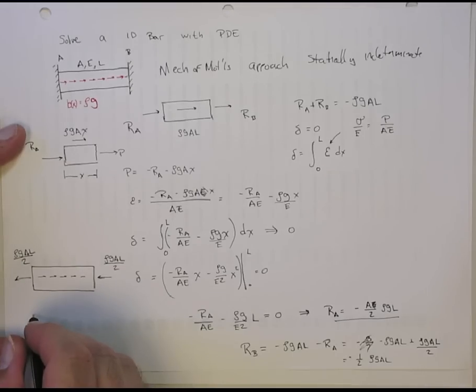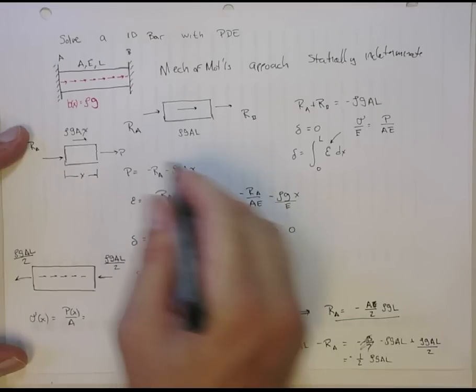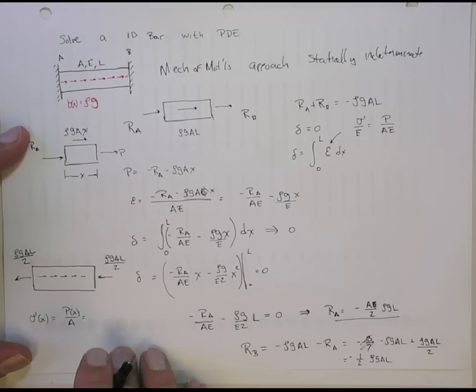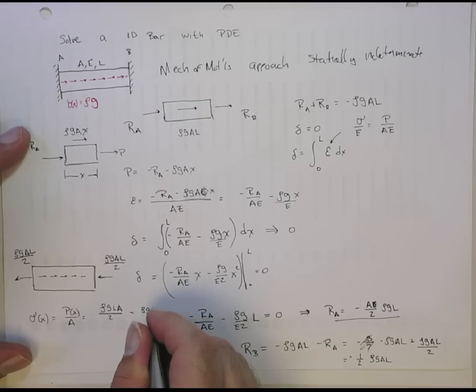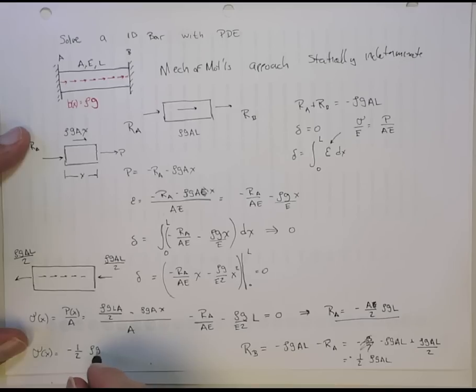I know that the stress at the point is this P over A. So the stress is P of x on A. P of x we got from here. That's minus RA. So that is minus RA is rho GLA on two minus rho GAx over A. So the stress at a point is gonna be minus one-half rho G, it's gonna be rho G L on two minus x. So that's the stress.